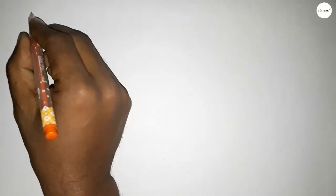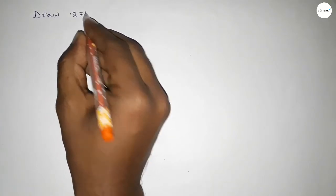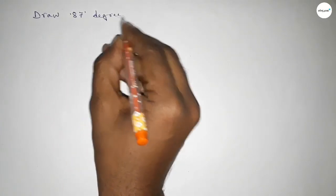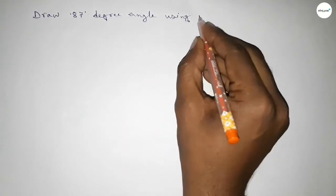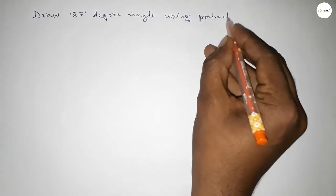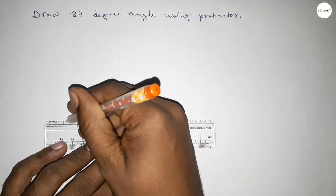Hi everyone, welcome to SI Share Classes. Today in this video, we have to draw an 87-degree angle using a protractor. So let's start the video. First of all, we have to draw a straight line of any length.